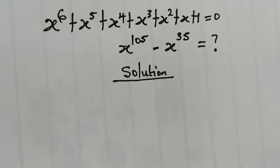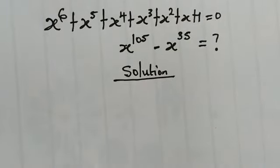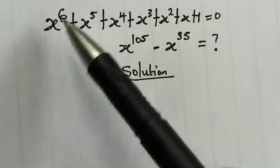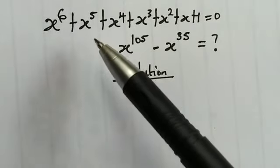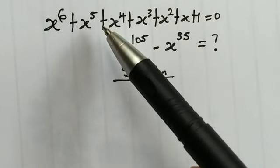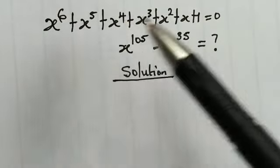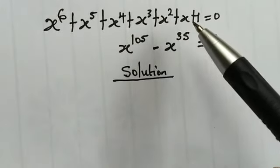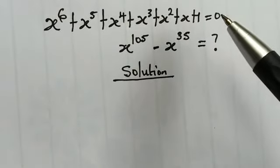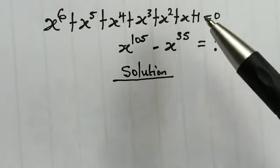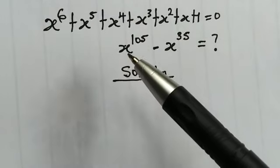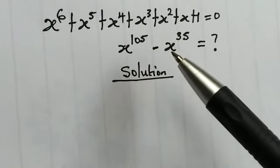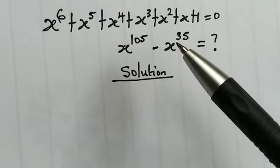Hello, welcome back to another video. Here we're given the following equation: x to the power of 6 plus x to the power of 5 plus x to the power of 4 plus x cubed plus x squared plus x plus 1 is equal to 0. And right over here we are asked to evaluate x to the power of 105 minus x to the power of 35.